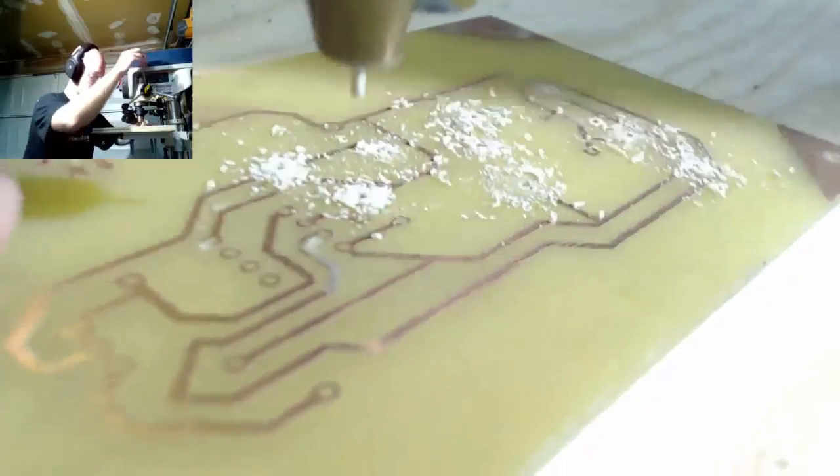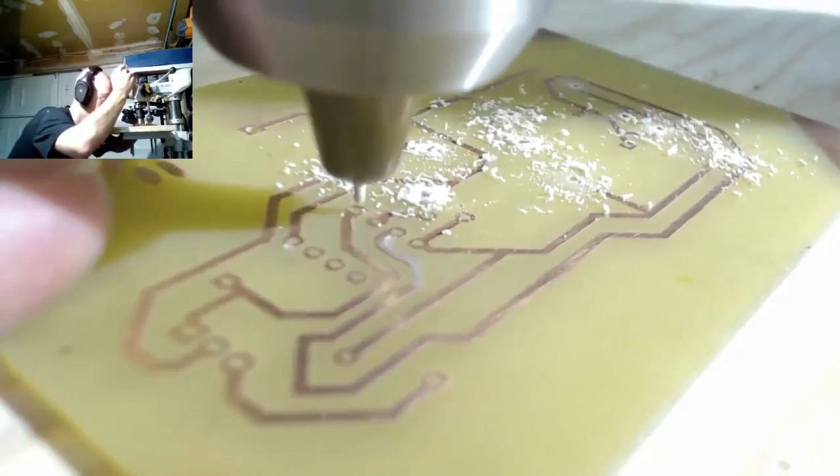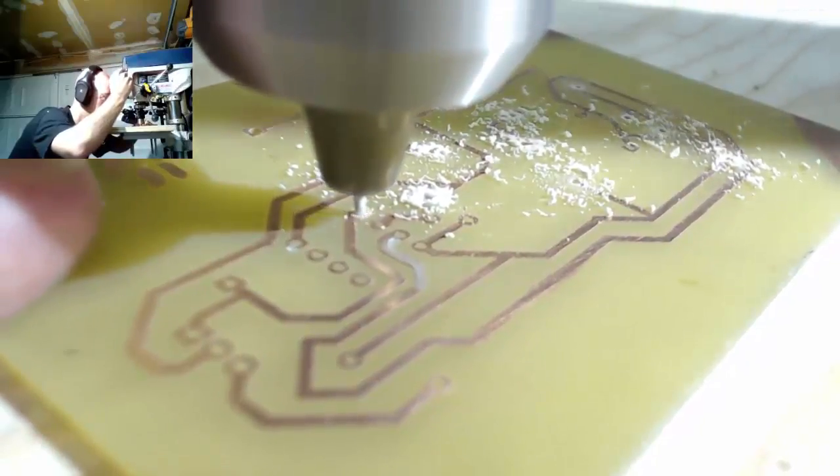With a drill press, the process is fairly straightforward. Align the drill, pull down the handle, and you have a hole where you want it.